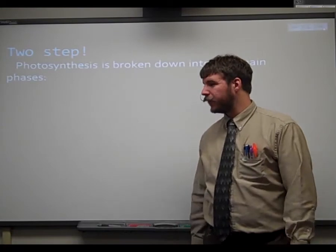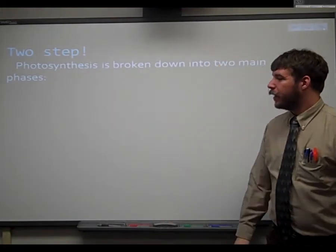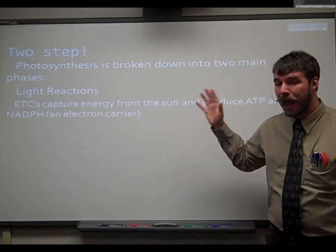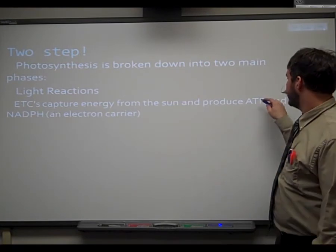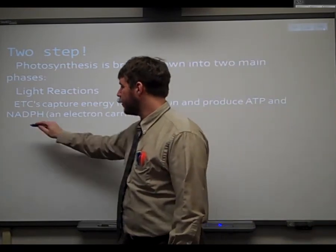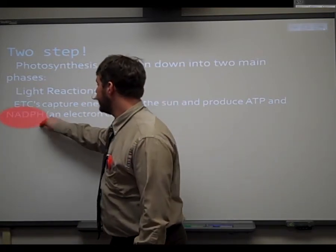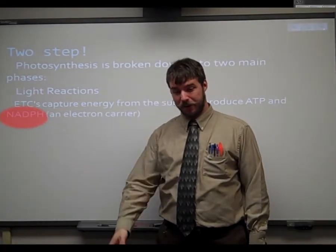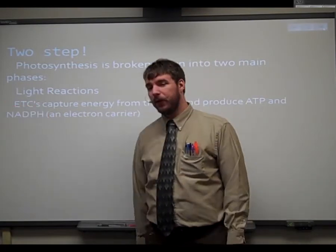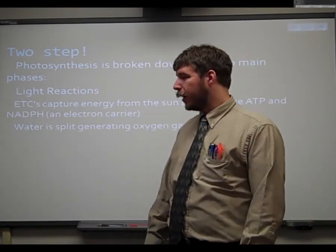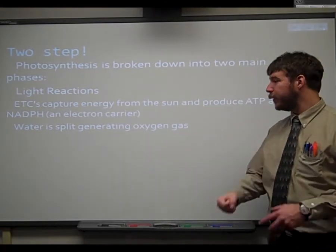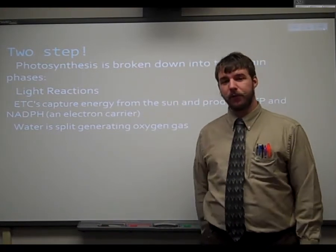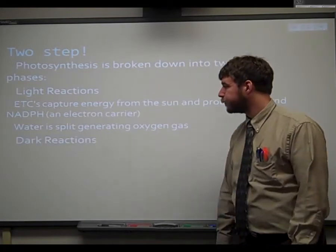This is a two-step process. Photosynthesis, two phases. You have the light reactions. This is where we actually use electron transport chains to capture energy from the sun. And instead of producing ATP, it makes a little bit, but for the most part we're really interested in NADPH. Slightly different electron carrier because it's got phosphorus in it, that's really the main difference. And we're going to use it to capture and throw some Hs on it. Essentially water gets split, and that is what generates the oxygen gas. So in the light reactions is when the oxygen byproduct is made and released into the atmosphere.